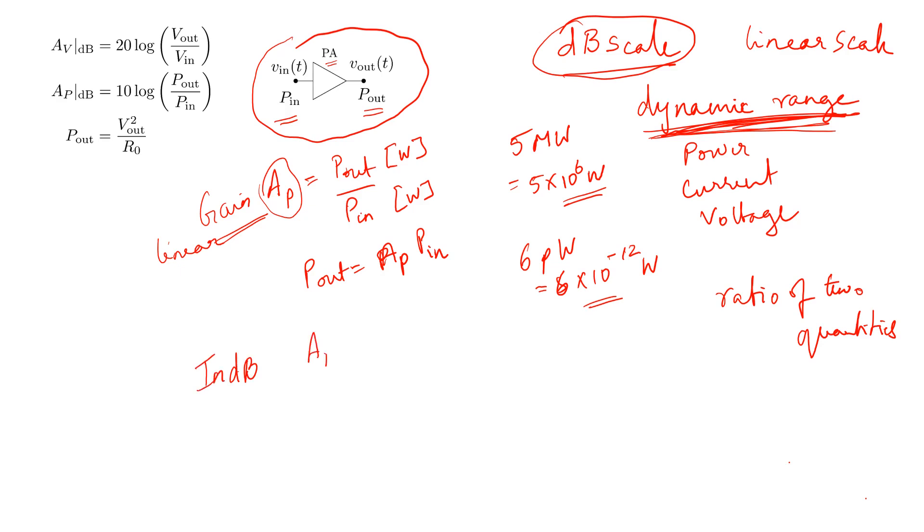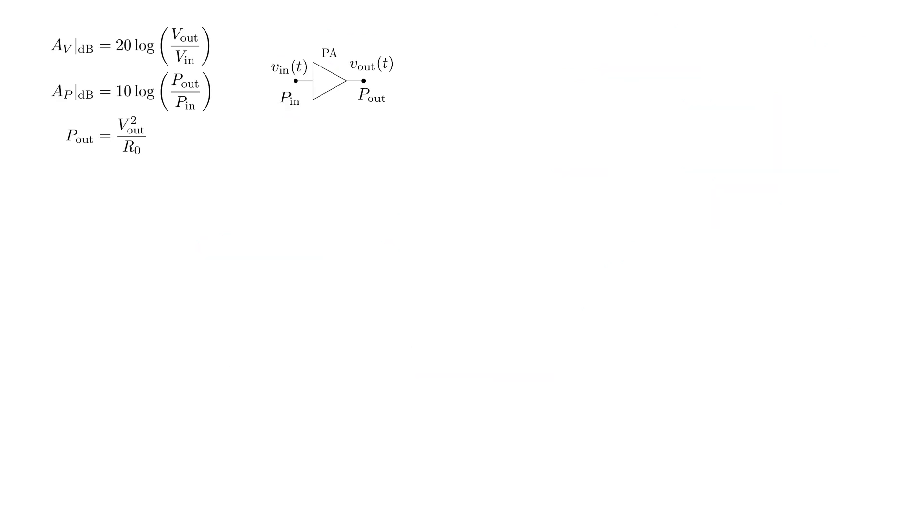The gain, the same A_P in dB scale, is going to be defined as 10 log₁₀ of the output over the input. So it's the same linear ratio, but you take 10 log₁₀ of it and you get the power in dB scale. So to summarize,